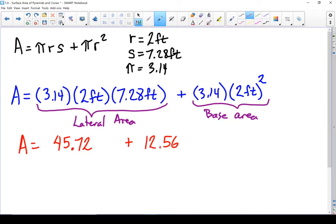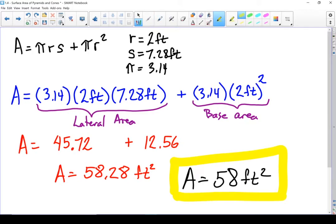Add those two pieces together and my area equals 58.28 and it is an area so we're looking at 58 feet squared. The question also asked to round it to the nearest foot. So my area equals 58 square feet. There's my area.